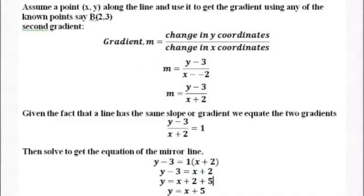Assume a point on the line with unknown coordinates (x, y) and use it with the known coordinates, say B, to calculate the second gradient.